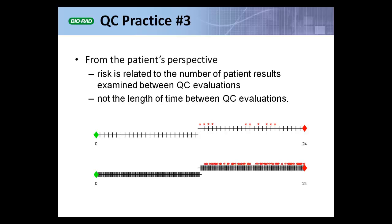The little red asterisks are meant to denote patient results that fail to meet their quality requirement. In these two situations, the interval between QC testing is the same — 24 hours — but in the lower cartoon, many more patients are tested between QC events. The fraction of red asterisks in the two cases is the same, but there are many more red asterisks in the bottom cartoon than in the upper cartoon.